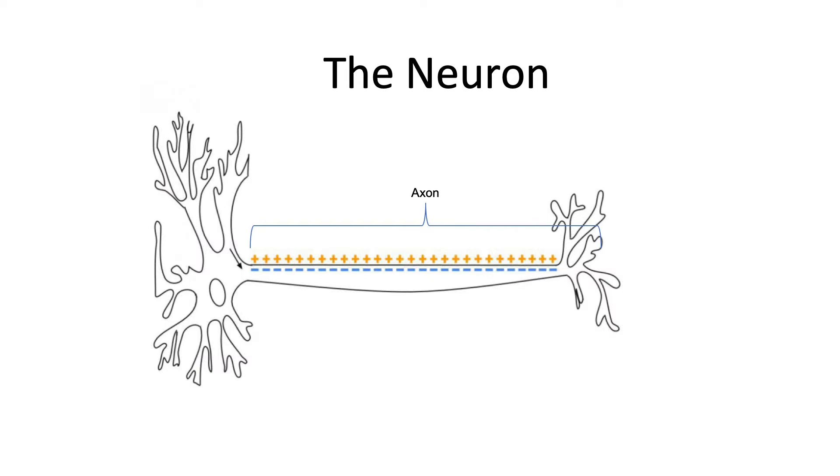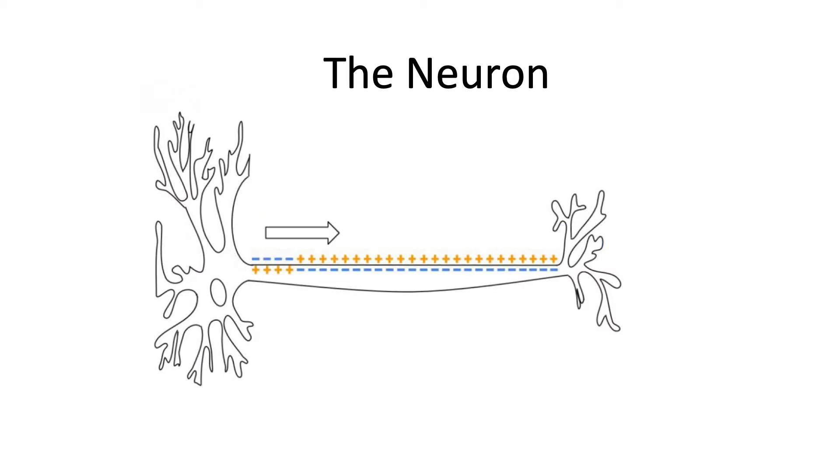When resting, axons are lined with positive ions on the outside and negative ions on the inside. When the level of neurotransmitters gets high enough, it triggers the neuron's membrane to let positive ions in and release the negative ions. This movement passes down the axon like a wave and reaches the branch-like terminal.